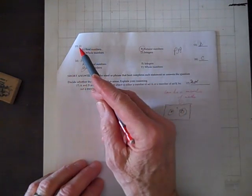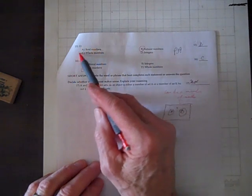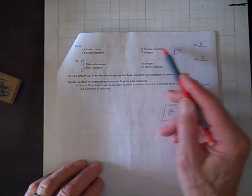For number 15, 13—oh, look at that, that's a natural number. It's a real number, it's a whole number, it's a natural number. B.